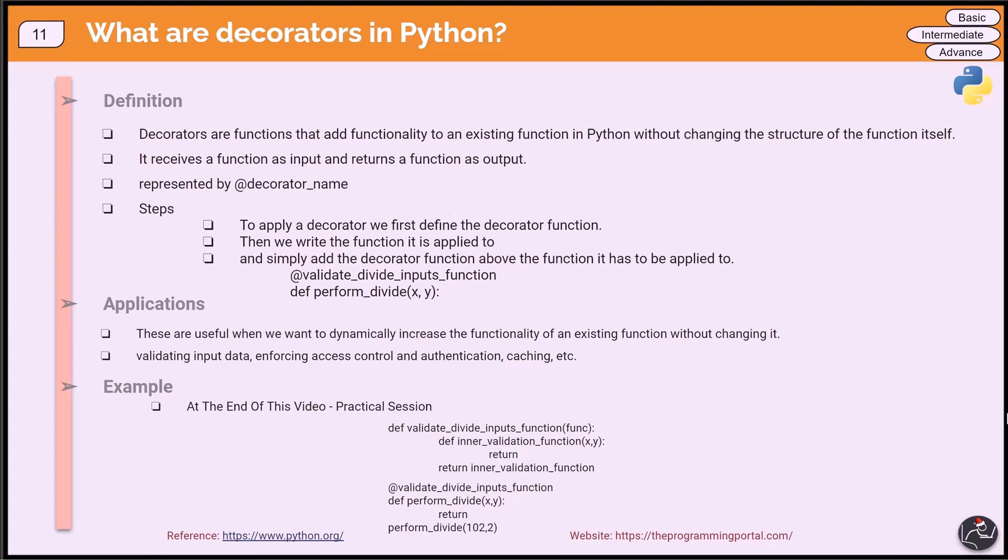So in decorator, what do we do? We write different validation function which will accept input as a function and return function as an output. It will also have an inner function in it. Then we decorate the existing divide function with a validation function using the @ symbol.